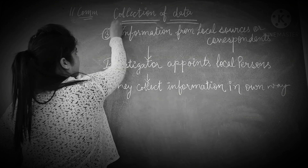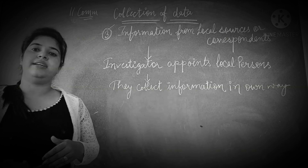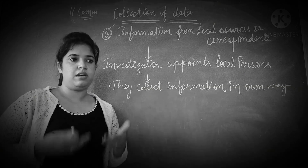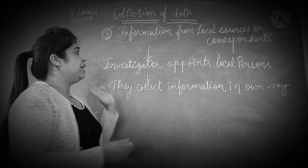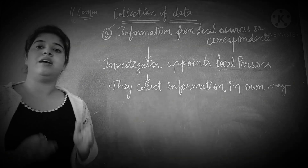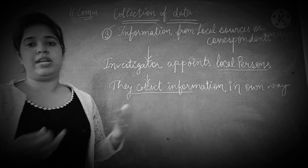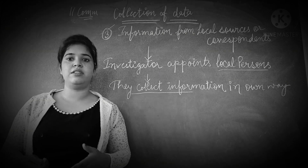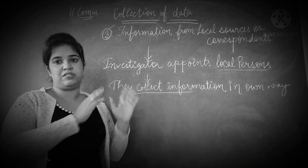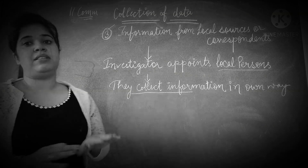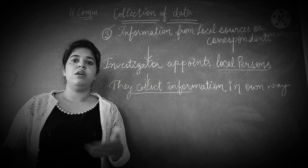This is the third method: information from local sources for correspondence. As we have already studied, investigators use various methods to collect data from different sources. Under this method, the investigator generally appoints local persons, and those local persons collect information in their own way — relevant information whatever is needed — and submit it to the investigator. This method is used where a large area is to be supervised or covered to get the information.